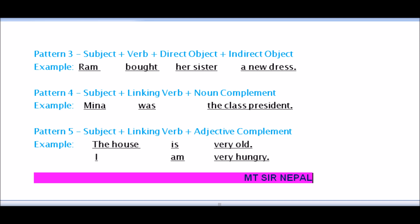Number 4 pattern: subject plus linking verb plus noun complement. Example: 'Mina was the class president.' Subject — linking verb — noun complement.